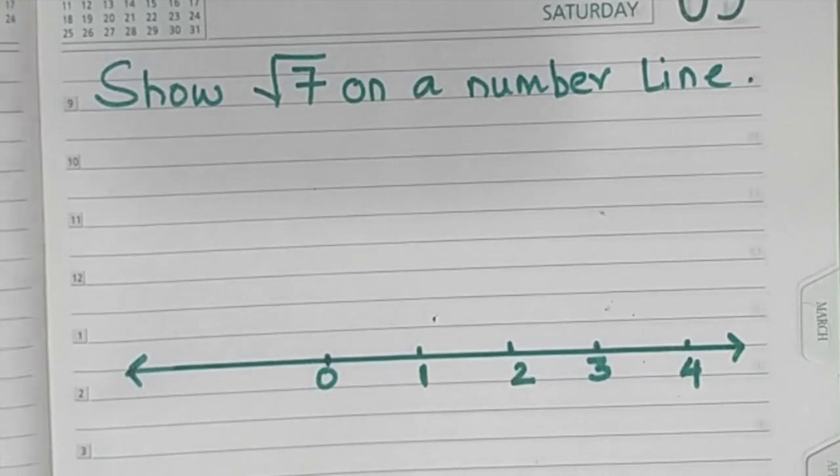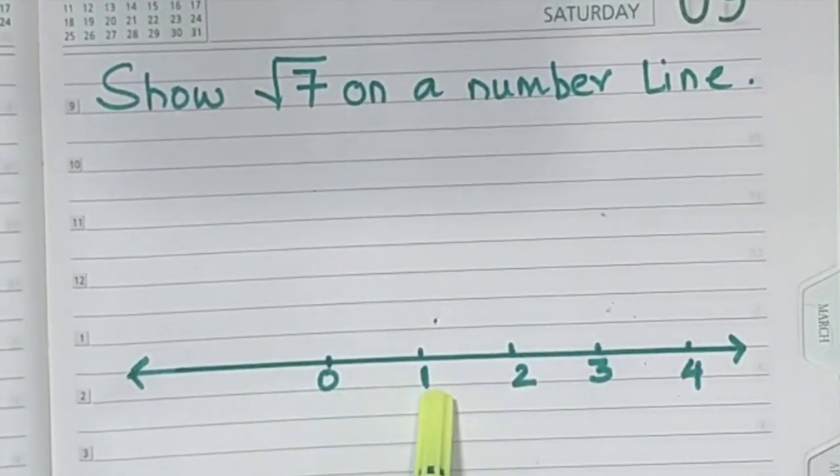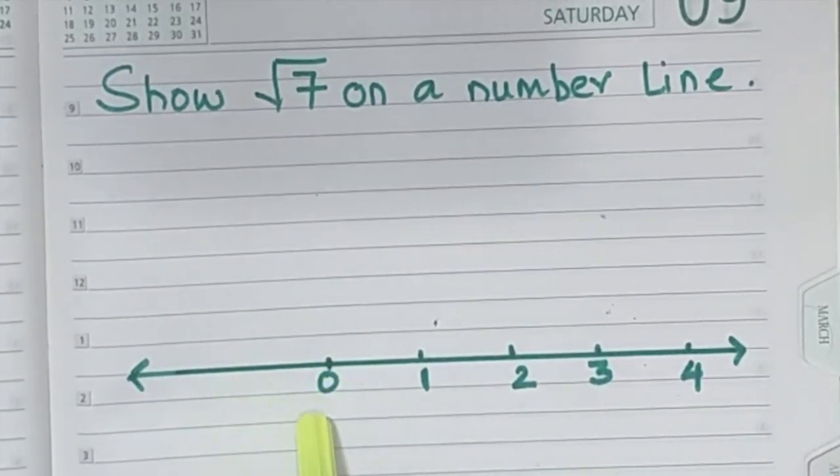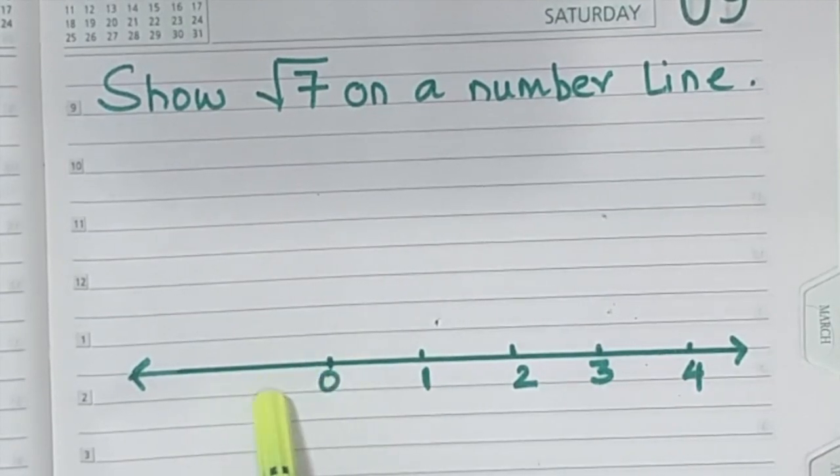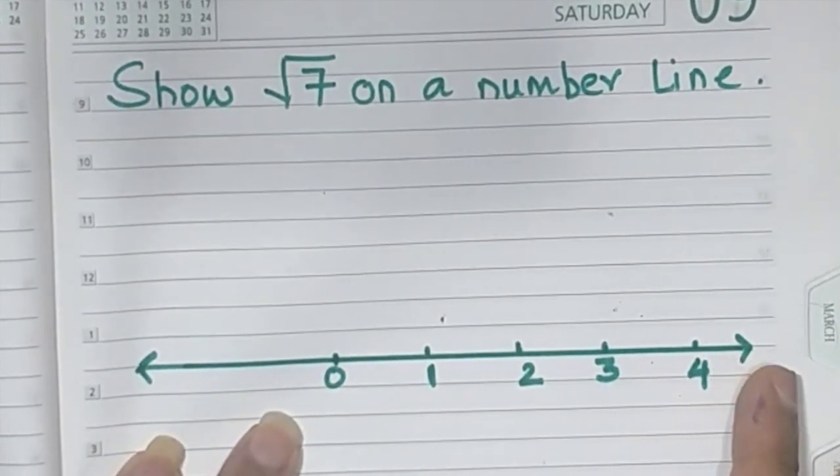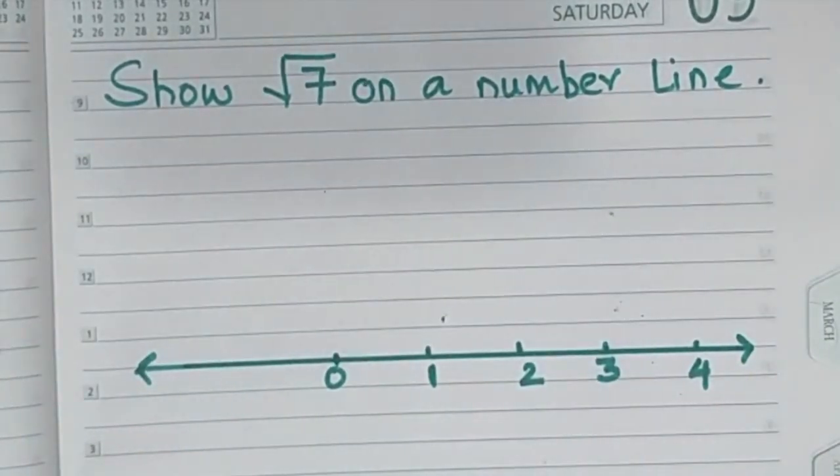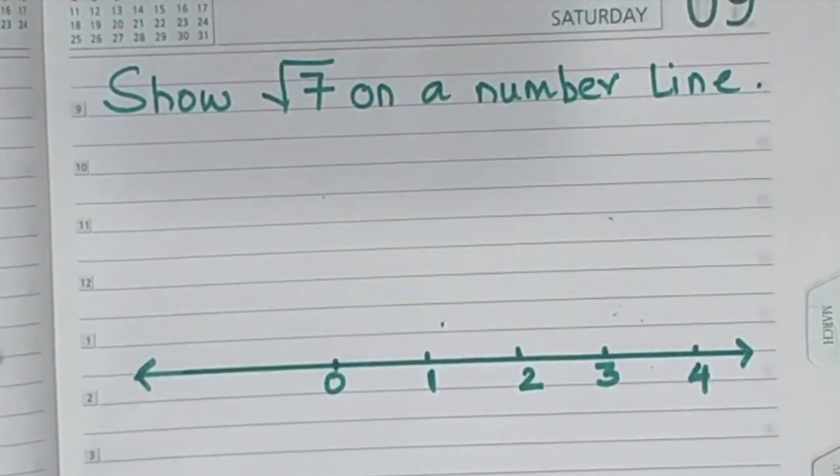To show root 7 on a number line, I've already drawn a number line. I have taken 0, 1, 2, 3, and 4. Now I've taken 0 not at the center, but a little towards the left hand side because I need more space here. So that plotting root 7 becomes easy. The distance between each point I have taken is 2 centimeters.